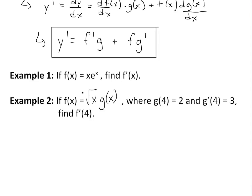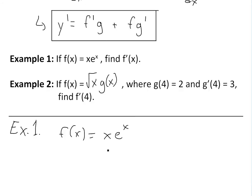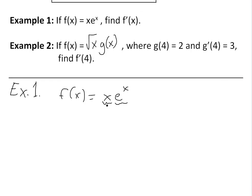These are the two examples I'm going to go over. The first example states: if f of x equals x times e to the x, find f prime of x. So now, f could be x and g could be e to the x. We have one function here and one function here. So we take the derivative of the first one — the derivative of x is just one, times e to the x.